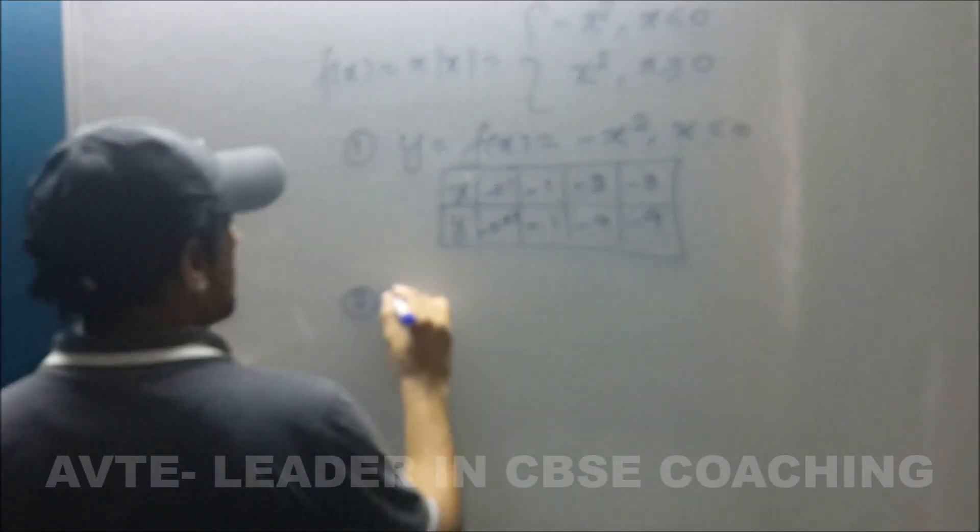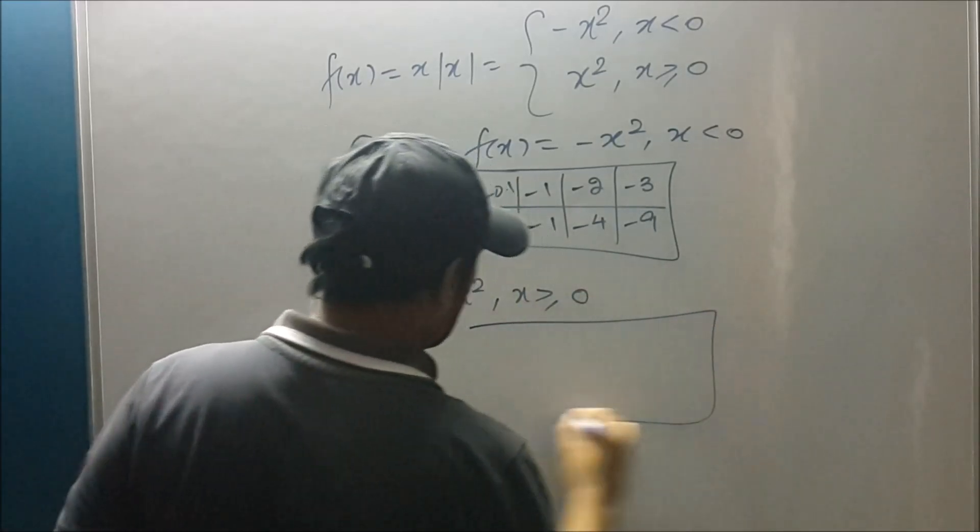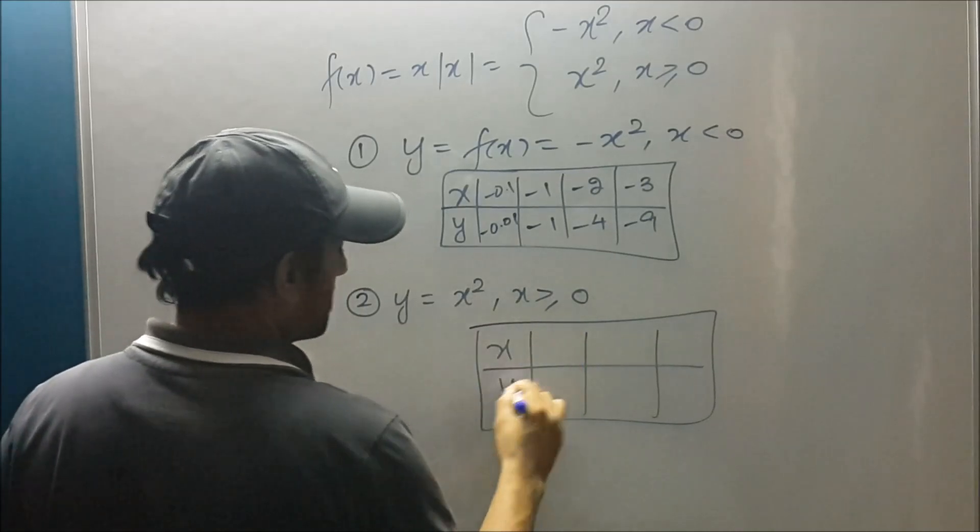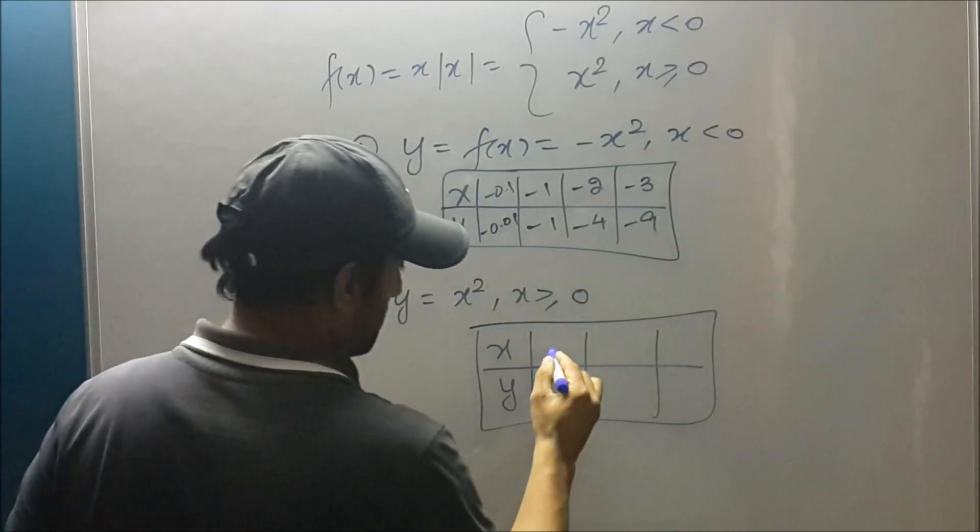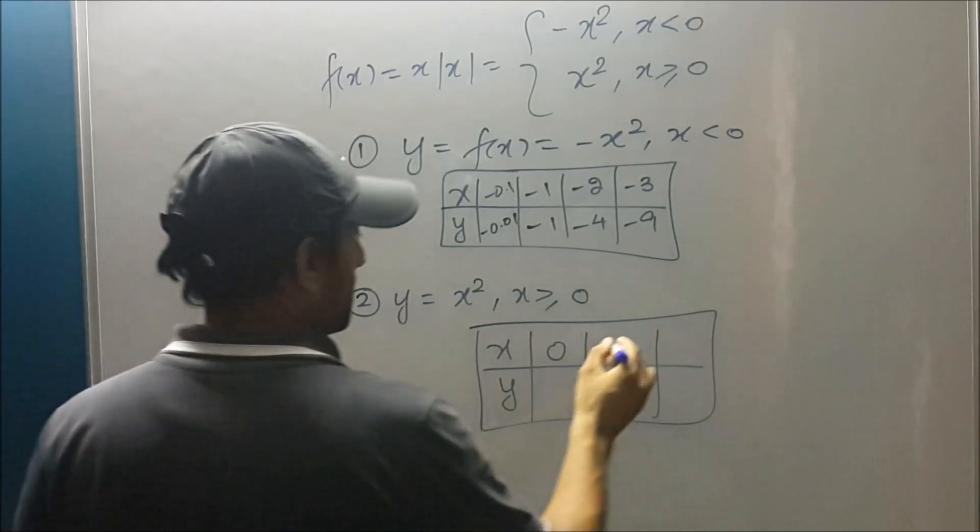So the second table will be when x is x squared when x is greater than equal to zero. And I again make a table but this time from non-negative values. So it could be zero and 1.1 and 1.7 but I am taking zero,